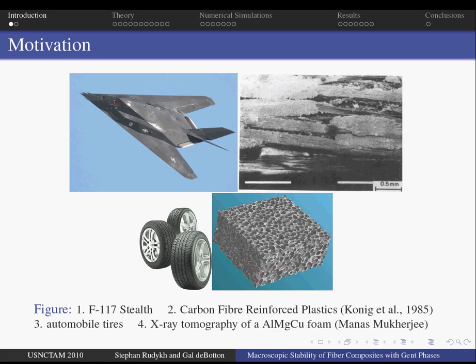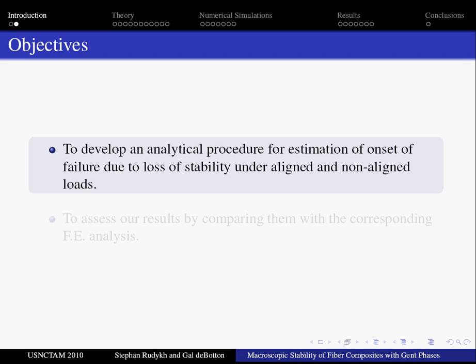In this study we consider a subgroup of composite materials, fiber reinforced materials. These materials have very good mechanical properties with respect to tension load, while their response to compression may lead to failure. Therefore, the prediction of their failure is an important characteristic aspect of their behavior. In our work we suggest investigating the failure due to loss of stability under aligned and non-aligned loadings.